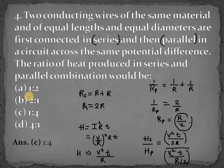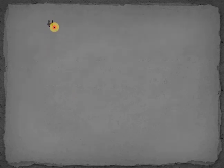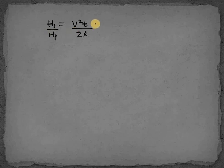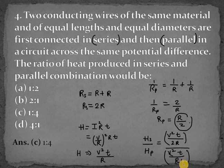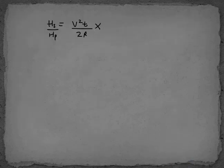Now we need to solve this equation to find the ratio of heat produced in series and parallel combinations. So Hs equals V squared T over 2R, divided by Hp. To find Hs over Hp, I will take the bottom term and reciprocate it so we can get the value. When we divide two fractions, we reciprocate the bottom term.